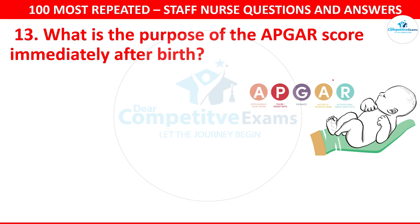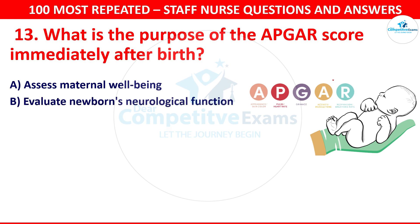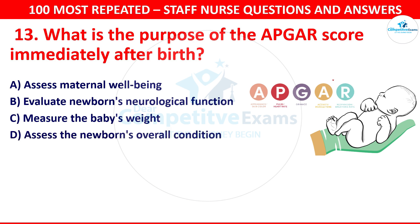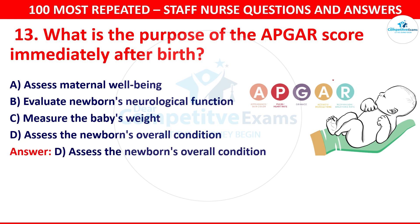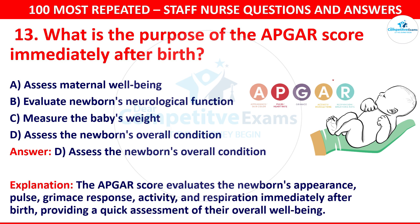Question 14. What is the purpose of the APGAR score immediately after birth? Your options are assess maternal well-being, evaluate newborn's neurological function, measure the baby's weight or assess the newborn's overall condition. The correct answer is assess the newborn's overall condition. The APGAR score evaluates the newborn's appearance, pulse, grimace response, activity and respiration immediately after birth, providing a quick assessment of their overall well-being.